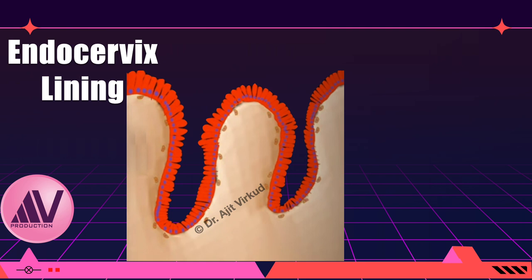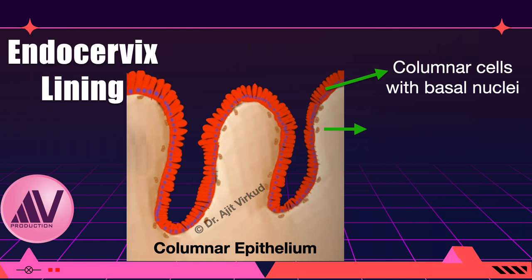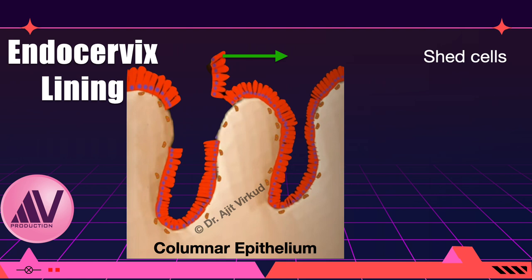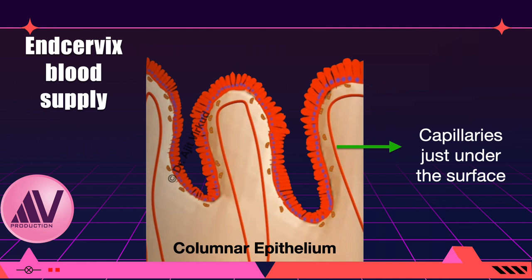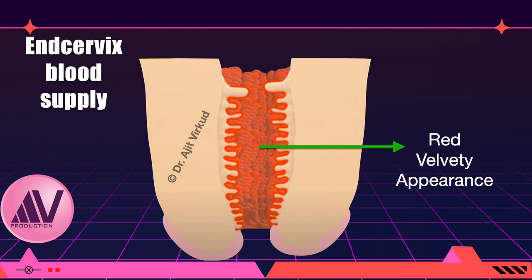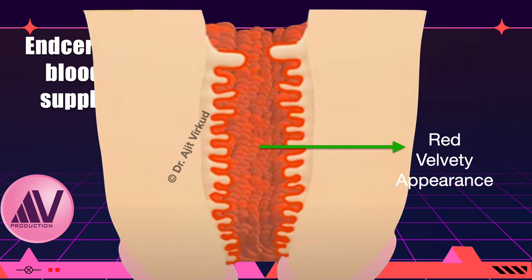The endocervical single layer lining has one characteristic feature — the columnar cells are shed very easily. The slightest trauma or friction can cause sheets of columnar cells to be detached and lost. Additionally, the capillaries supplying blood to the endocervical mucosa run in juxtaposition to the single layer of columnar cells, giving the endocervical mucosa a red velvety appearance when viewed through the colposcope. Under magnification, it looks like a spread of grapes as shown in the diagram.